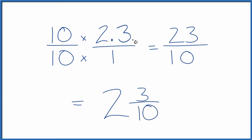So 2.3, it equals the fraction 23 tenths, which you could change to a mixed number, two and three tenths. And these are equivalent. They're the same value, 2.3. This is Dr. V. Thanks for watching.